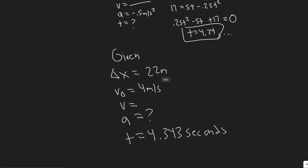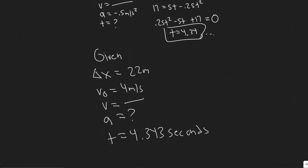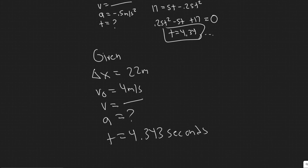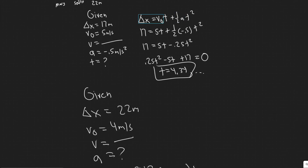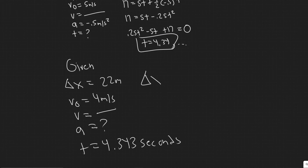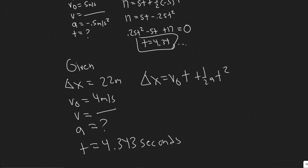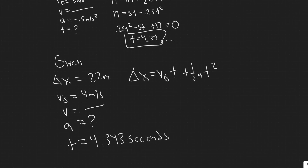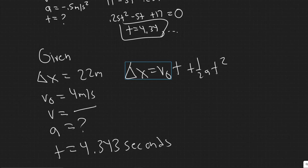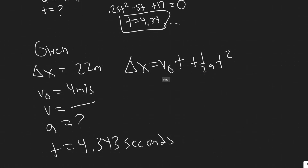We don't need the final velocity. We want to solve for acceleration a, given delta x, v sub zero, and t. We're going to use the same equation again: delta x equals v sub zero times t plus one half a t squared. It's just a matter of plugging in delta x, the initial velocity, and t, and that will give us the acceleration needed for this to happen.